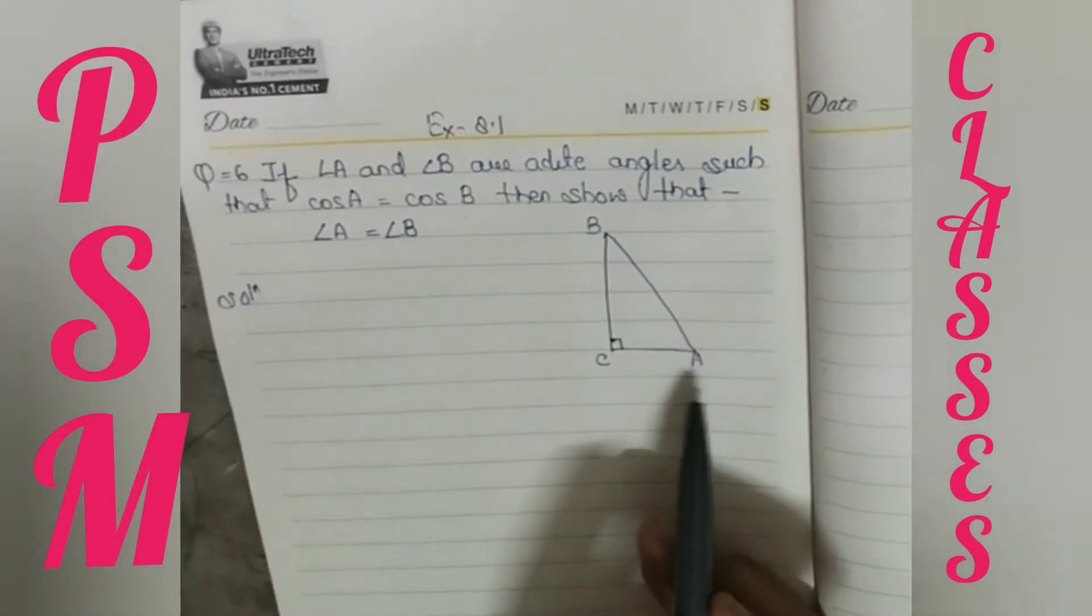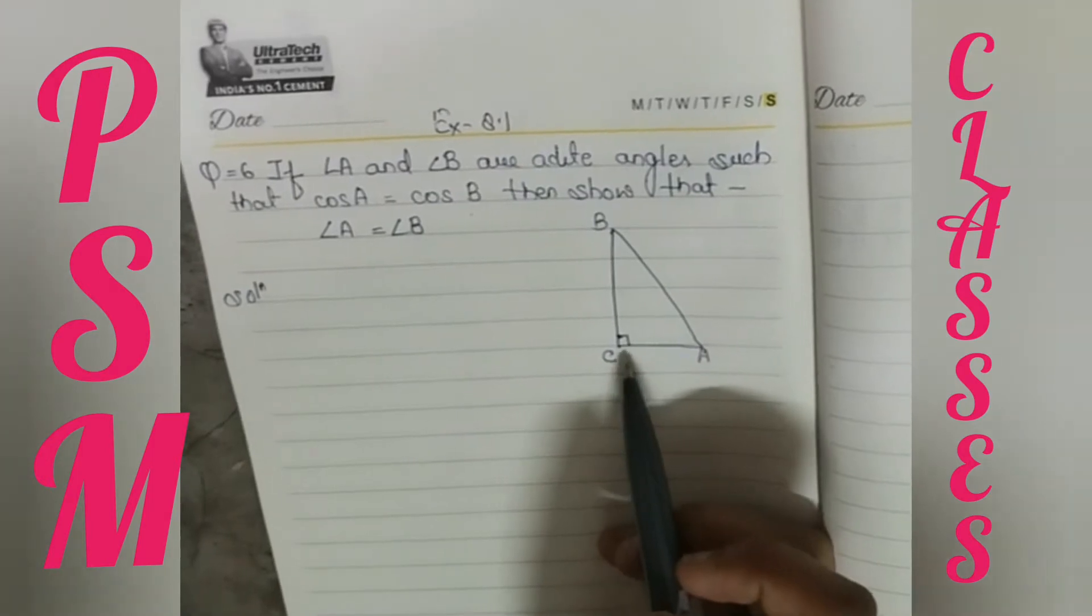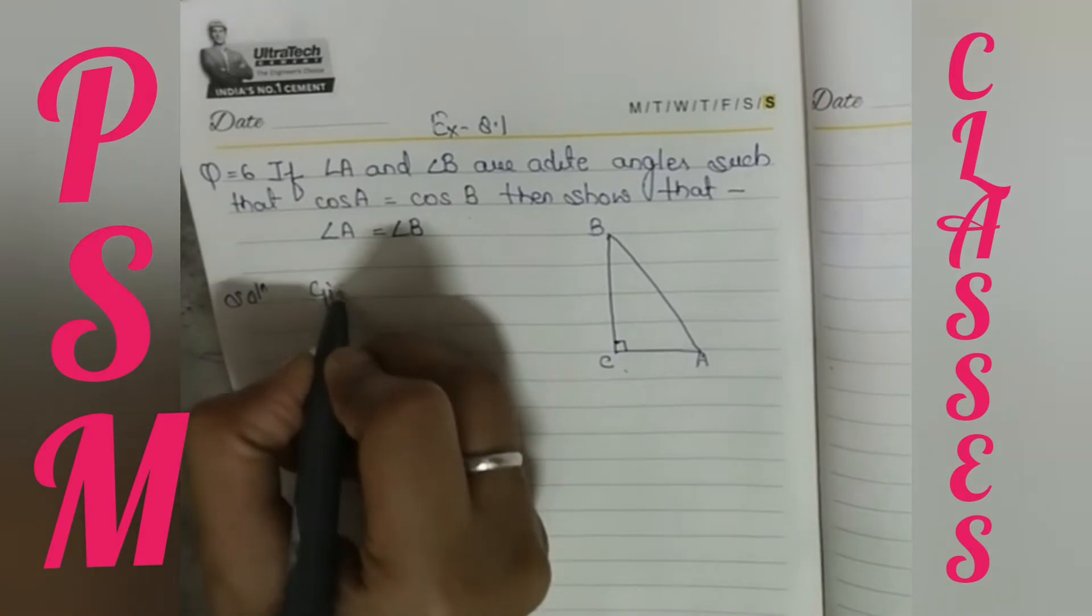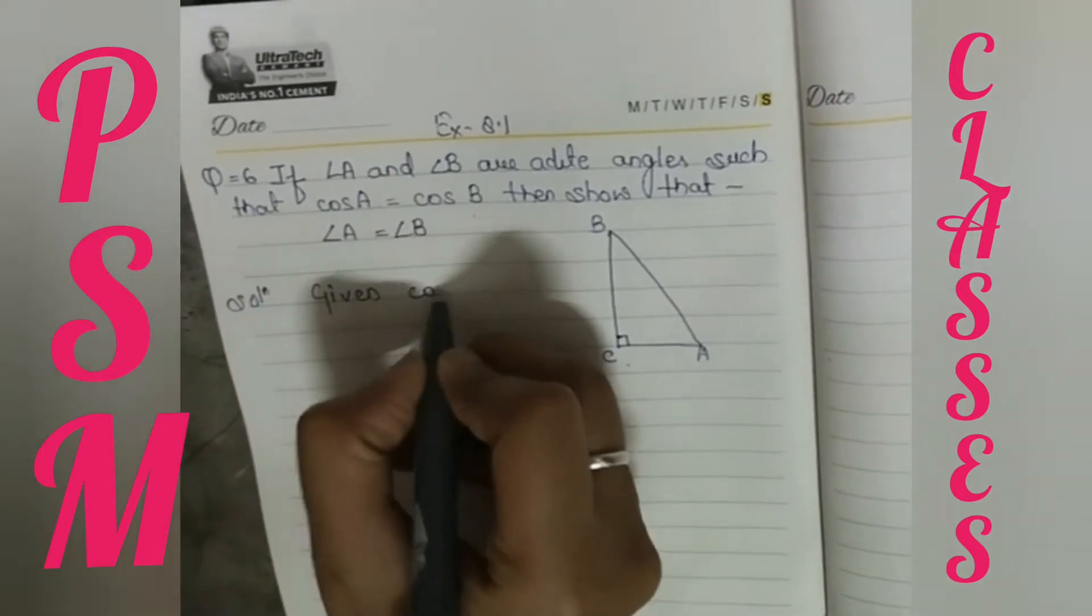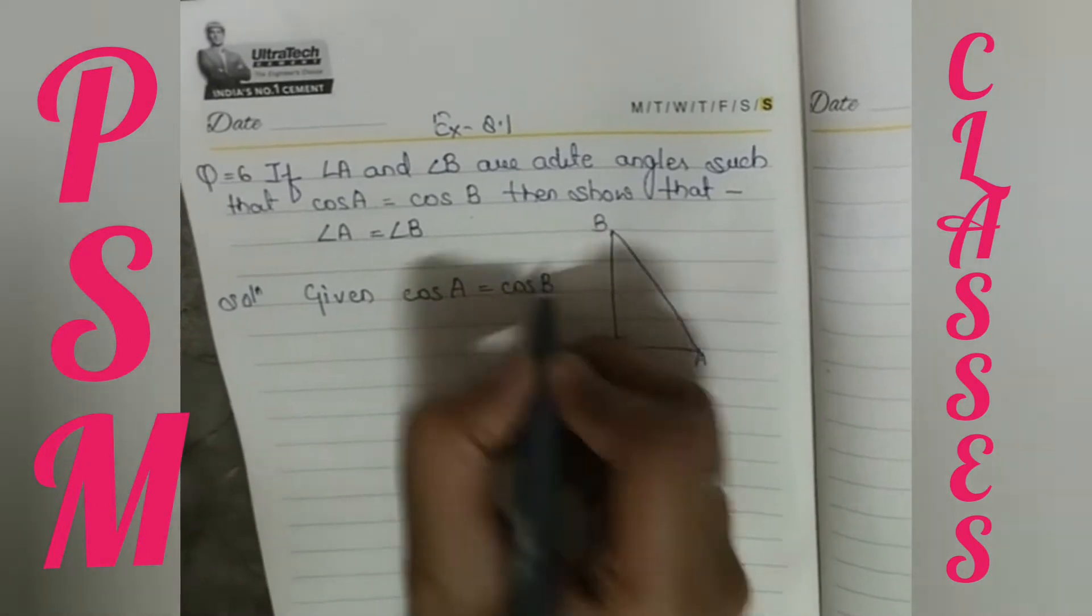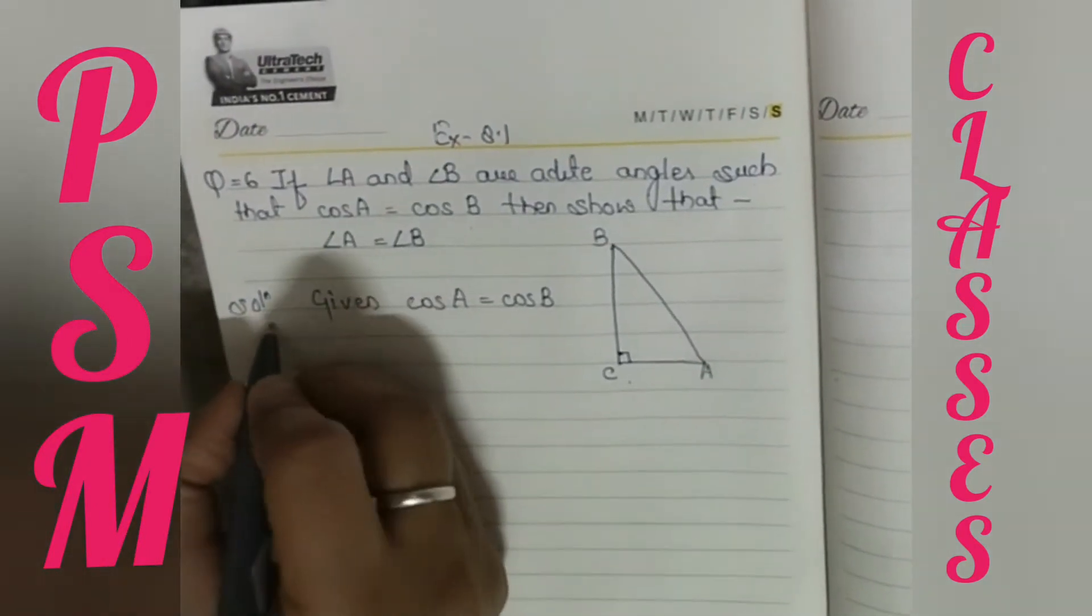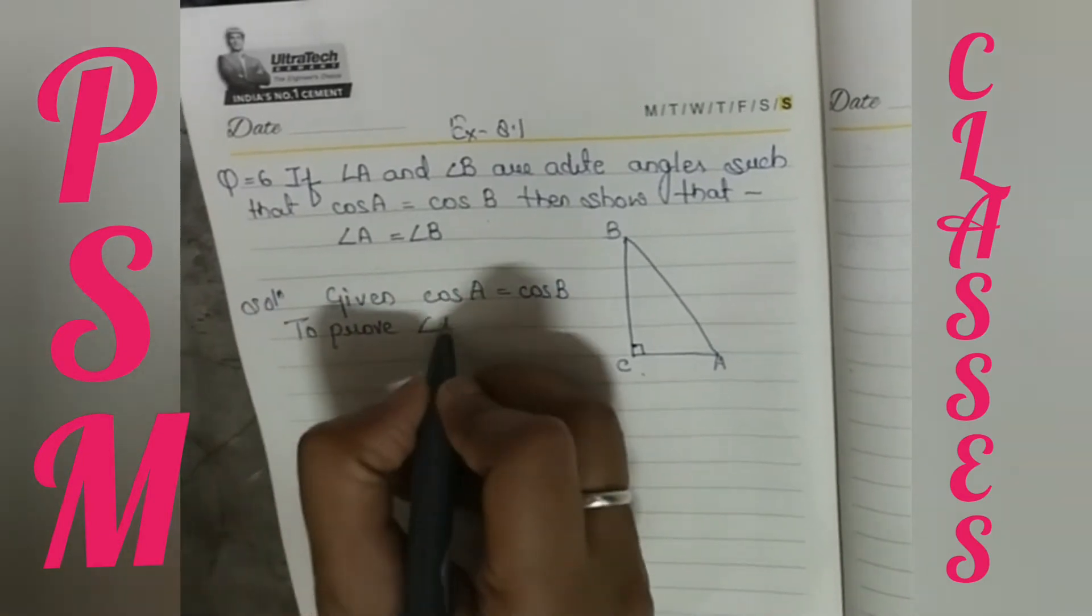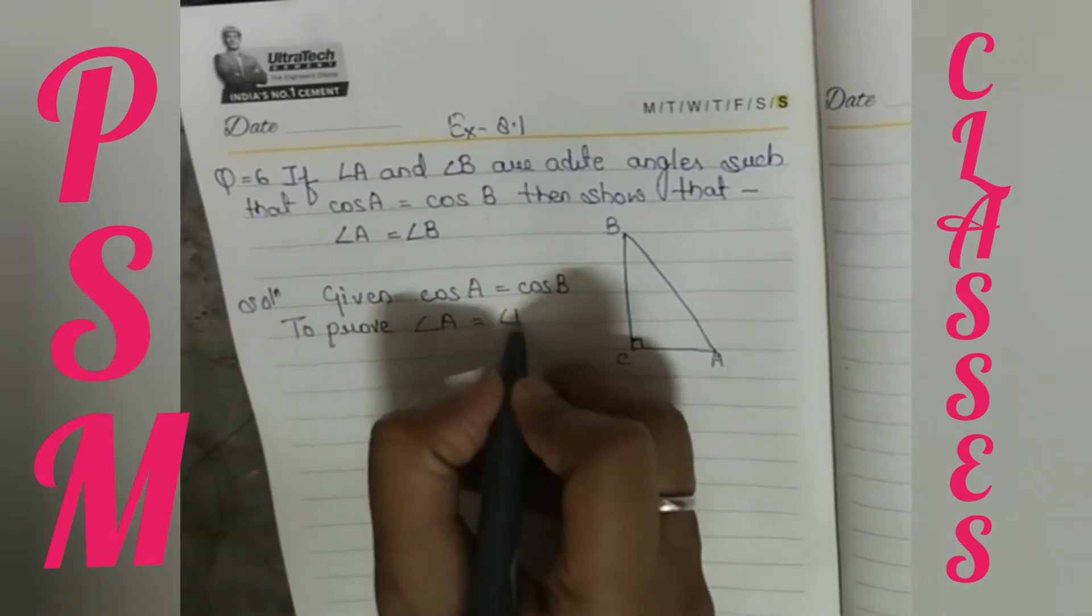This is a given figure where our perpendicular angle is at C. So what are we going to do? Let's start the solution. What is our given? Given is that cos A is equal to cos B. And what do we need to prove? We need to prove that angle A is equal to angle B.